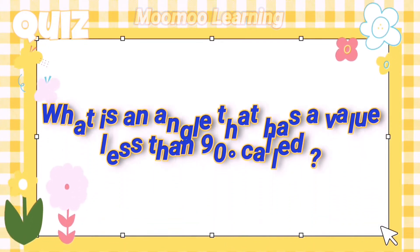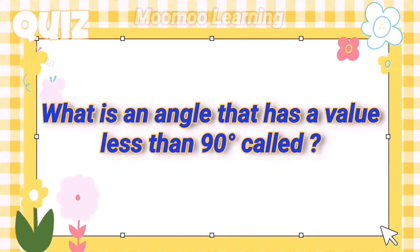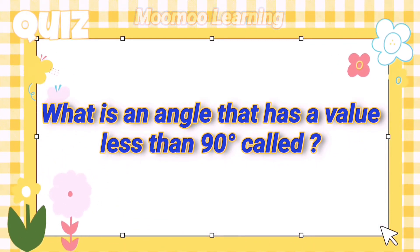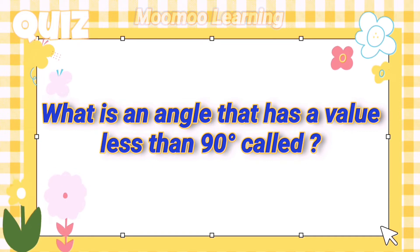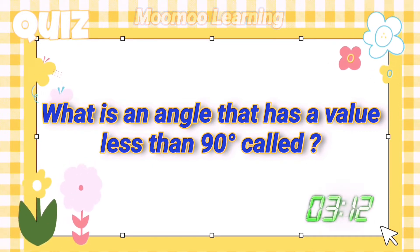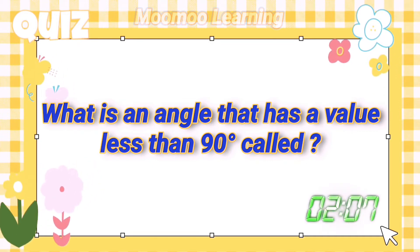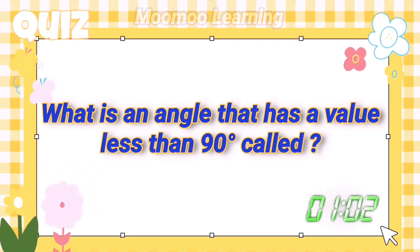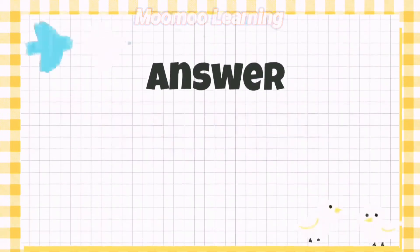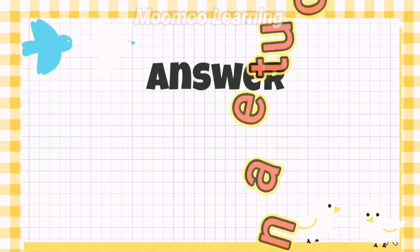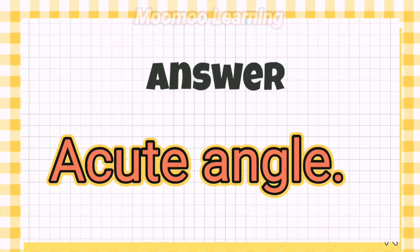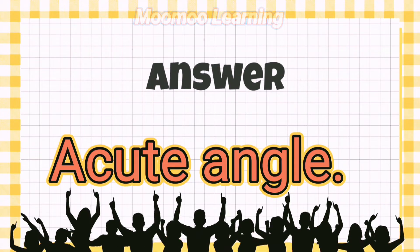What is an angle that has a value less than 90 degrees called? Answer: Acute angle.